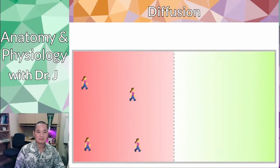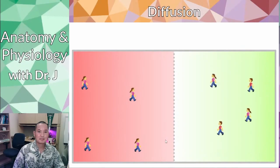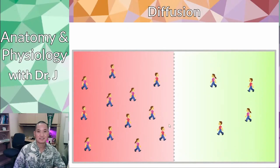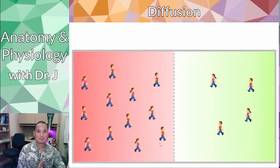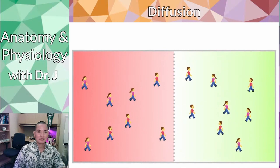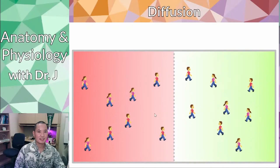Think of it this way: say you have two rooms and one gets really crowded. What's going to happen eventually? People want to spread out and social distance where it's comfortable, because on average people are going to distribute pretty evenly across the space if you allow exchange between the two areas. Diffusion is kind of like that — it's like these chemicals finding their comfortable space where they're roughly evenly distributed throughout an area.